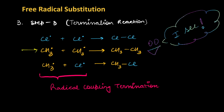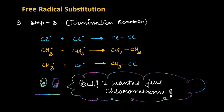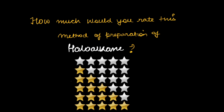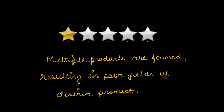If my agenda was to produce just chloromethane, we have ended up getting so many different products. Chloromethane is not going to be formed in high yield. So how many stars would you rate this method of preparation of haloalkane? It turns out we give just one star — because multiple products are formed, resulting in poor yields of the desired product, chloromethane in our case.